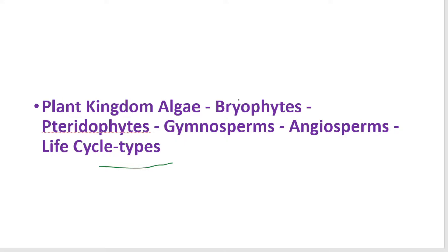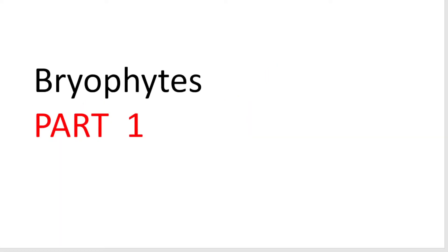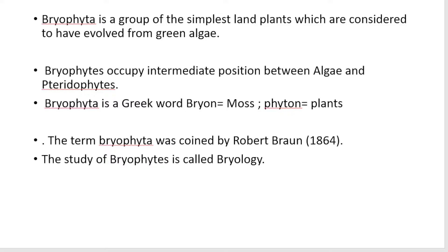We are going to study bryophytes general characters. Bryophytes is a group of simplest land plants which is considered to have evolved from green algae. Bryophytes occupy an intermediate position between algae and pteridophytes.